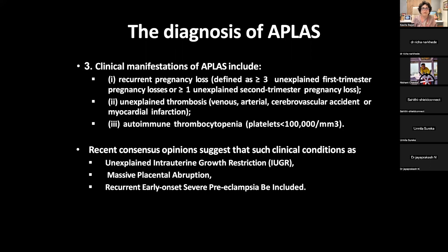The clinical manifestations for APS diagnosis include: number one, recurrent pregnancy loss, defined as more than three unexplained first-trimester pregnancy losses or more than one unexplained second-trimester pregnancy loss; number two, unexplained thrombosis — venous, arterial, cerebrovascular accident, or myocardial infarction; and number three, autoimmune thrombocytopenia where platelet count is not more than one lakh.